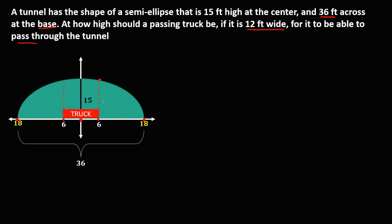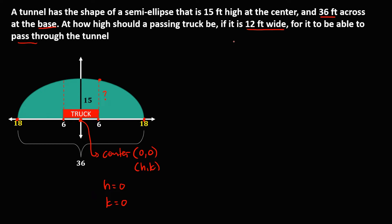To find the height of the track, since the center is at the origin — this one is the center — therefore the coordinate is (0, 0), and the center of an ellipse is (H, K). So H is equal to 0 and K is also equal to 0. Since this is a horizontal ellipse, the formula is: X minus H squared over A squared, plus Y minus K squared over B squared, equals 1.